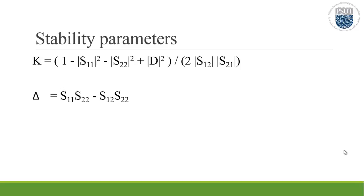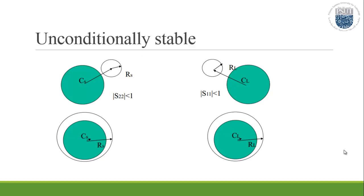For the unconditionally stable, k must be greater than 1, and delta must be less than 1. This shows no intersection between stability circles and Smith chart, where the amplifier remains stable through Smith chart domain.